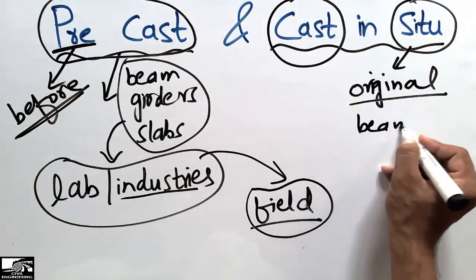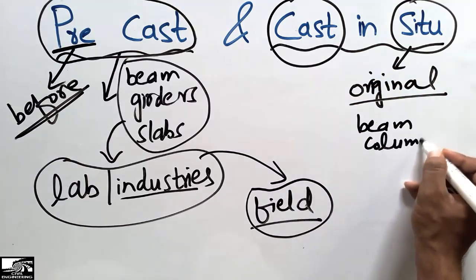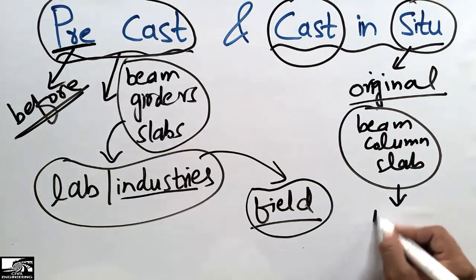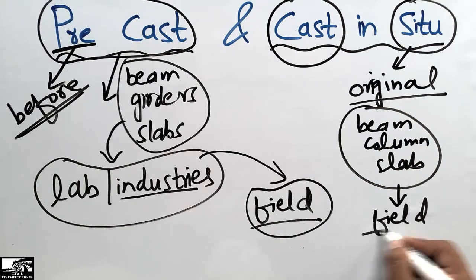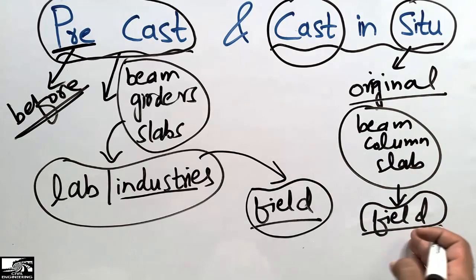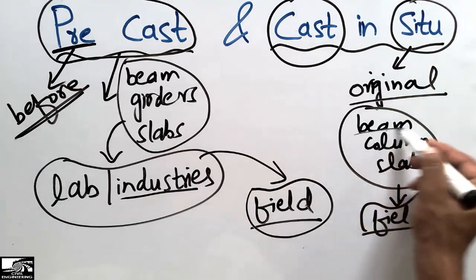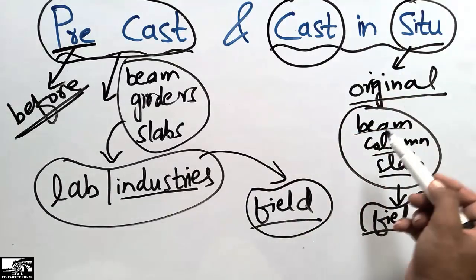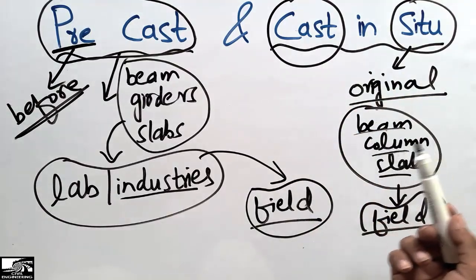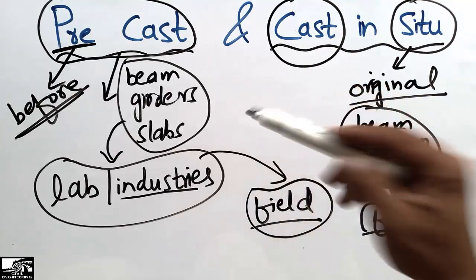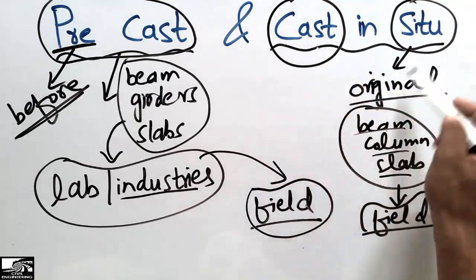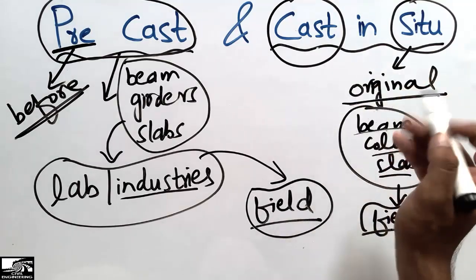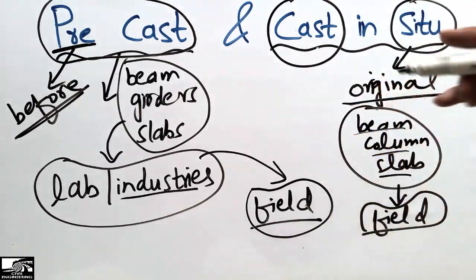For cast-in-situ, any structural member — whether it is a beam, column, or slab — is prepared directly on the site. We pour the concrete and manufacture these members right on the field. Examples include cast-in-situ beams, cast-in-situ columns, and cast-in-situ slabs.